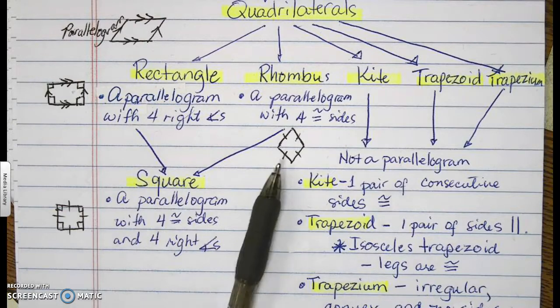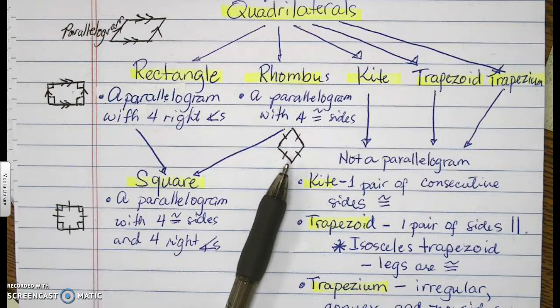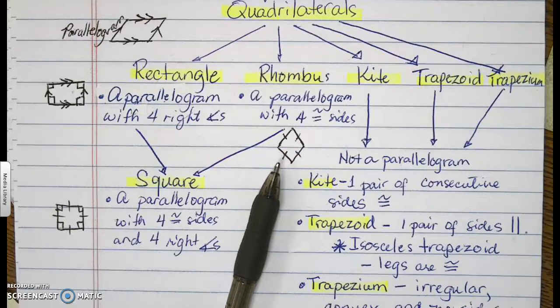In a rhombus, again, both pair of sides are parallel because it's a parallelogram. But the most important description is that the sides are congruent.